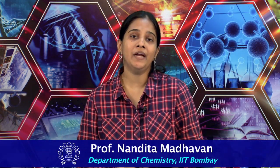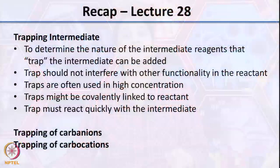Welcome back. In the last class we were looking at how you can get an idea of what an intermediate is by trapping it. We had looked at what properties a trap should have: a trap should not interfere with the reaction, it should react with the intermediate, and typically a trap is added in excess concentration so there is a greater probability of it reacting with the intermediate. We also saw how the trap can be part of the reactant to quickly grab the intermediate, and we looked at specific examples of how traps can be used for intermediates such as carbanions and carbocations.